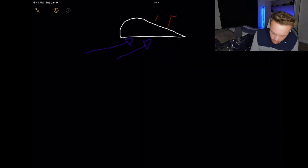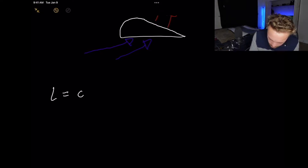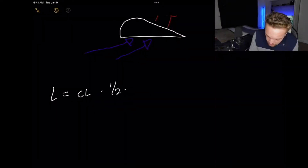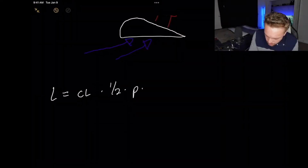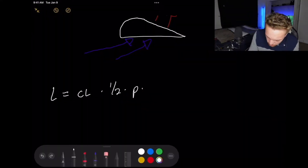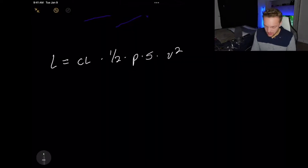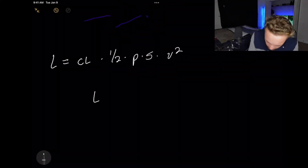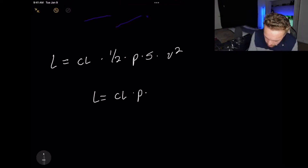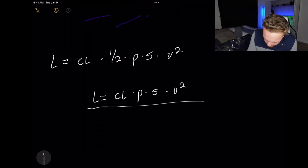What is the lift equation? Lift equals the coefficient of lift times one half times rho times surface area times velocity squared. Another way you will see this written — they mean the same thing, but we're going to stick with the top one — lift equals the coefficient of lift times rho times surface area times velocity squared divided by two.